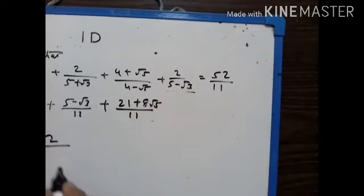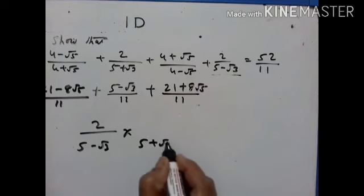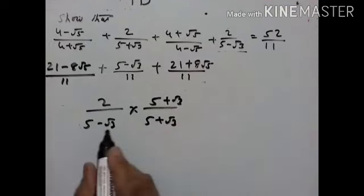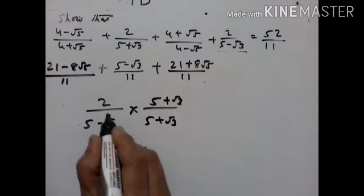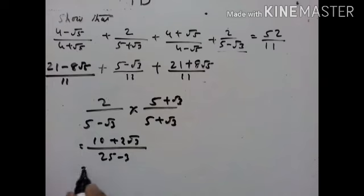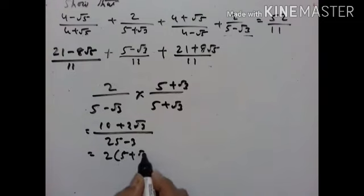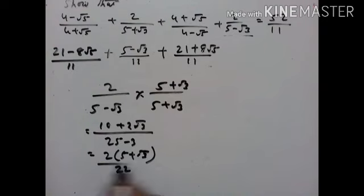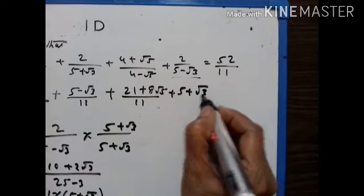Now take 2 upon (5 minus √3). Rationalize by multiplying by (5 plus √3). The denominator gives 25 minus 3 = 22. The numerator is 2(5 plus √3) = 10 plus 2√3. Taking 2 common: (5 plus √3) upon 11.